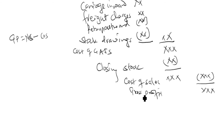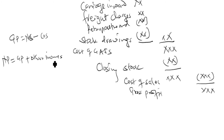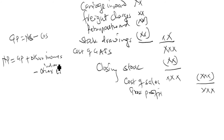We have gotten the gross profit; now we proceed to get the net profit. Net profit is the gross profit plus other incomes, then less other expenses which are indirect expenses. Remember our gross profit is an income — that's why we add other incomes, then subtract all indirect expenses. We start by adding other income.